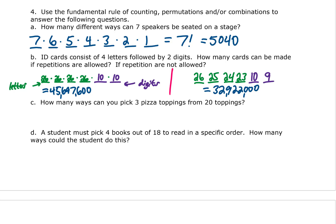Next question is how many ways can you pick three pizza toppings from 20 toppings? Now we're choosing things from a pool of options, so that suggests combinations or permutations. The question is, does order matter?